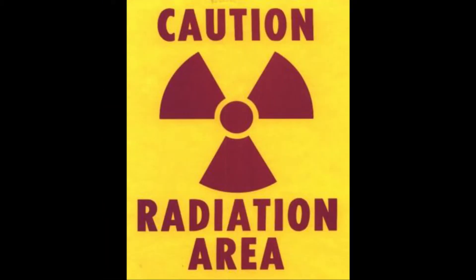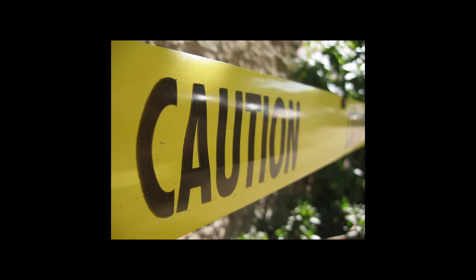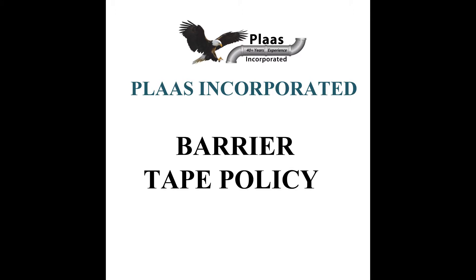Entering the barrier area shall be avoided unless there is a business purpose to do so. If the barrier is blocking a thoroughfare, find another way around. If you need to access the area that has been cordoned off, call the contact on the barrier tag. An evaluation of the work conditions inside the barrier shall be performed before beginning work to ensure proper hazard recognition, protection methods and equipment, and worker communication.